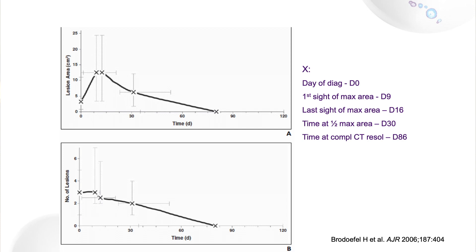This is the typical pattern: the nodule with ground glass change around it, then about 7 or 8 days later the area of consolidation has increased in size, and it's only on day 20 that there's shrinkage — many weeks or months before the CT returns to normal. In this large study of 80-plus patients, when they plotted the size, it actually went up in the first week or 10 days before going down.